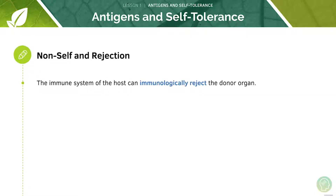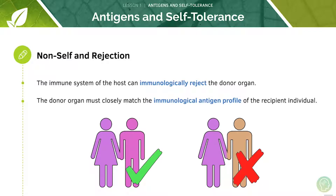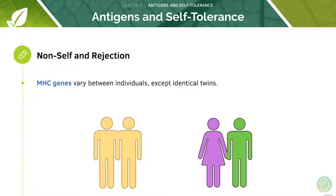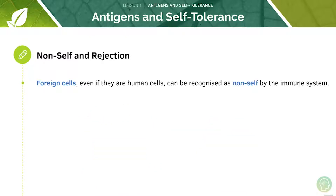The immune system responds to non-self and foreign pathogens. Sometimes our immune systems can be counterproductive — patients often need organ transplants and the immune system of the host can immunologically reject the donor organ. The donor organ must closely match the immunological antigen profile of the recipient individual. It's important to understand that MHC genes, as well as other antigen genes, are different between individuals, except for identical twins. Foreign cells, even if they are human cells, can be recognised as non-self by the immune system, causing it to attack those foreign cells.